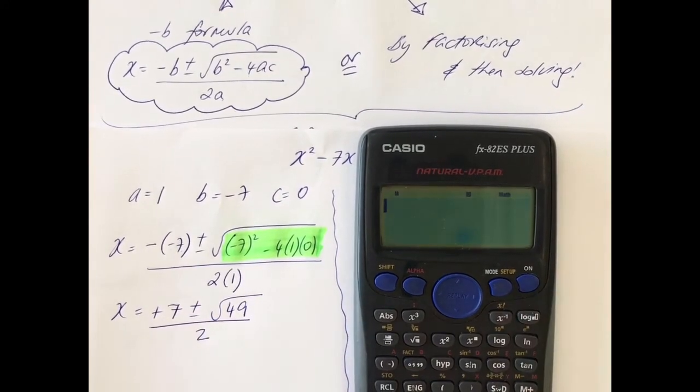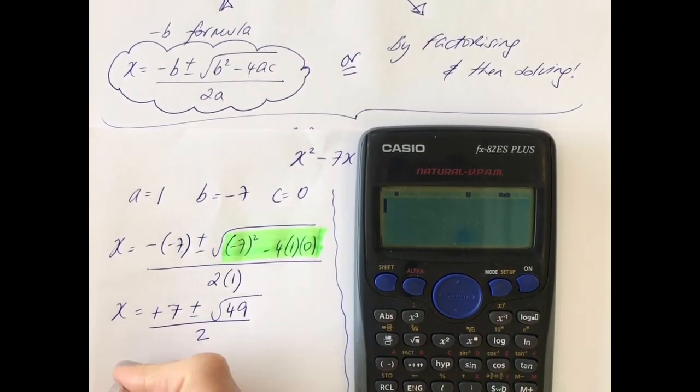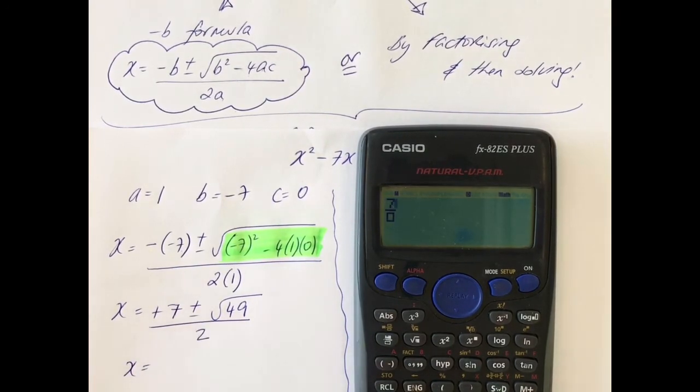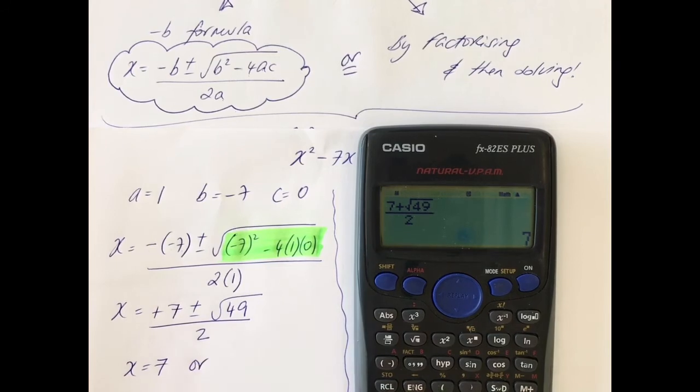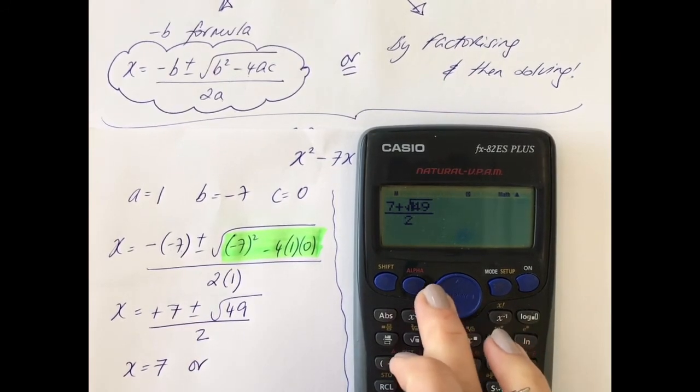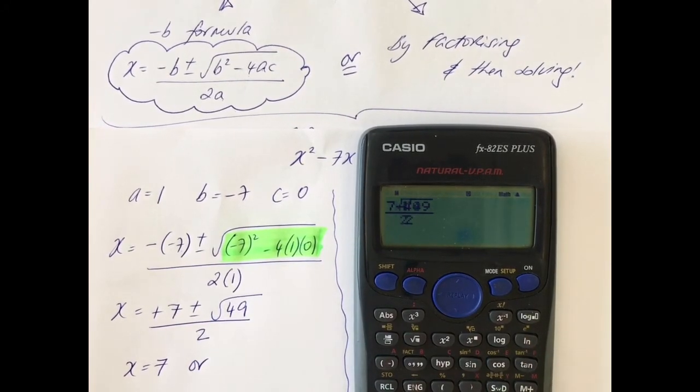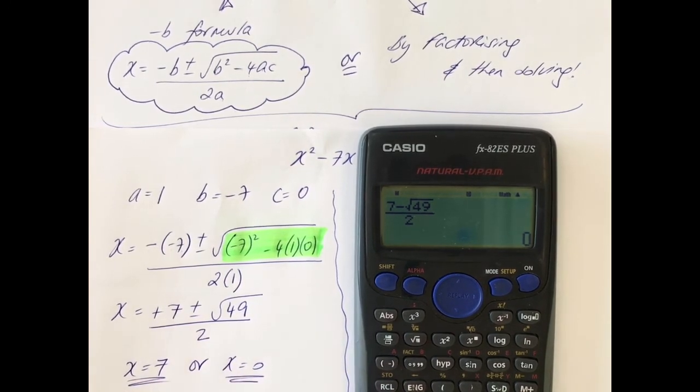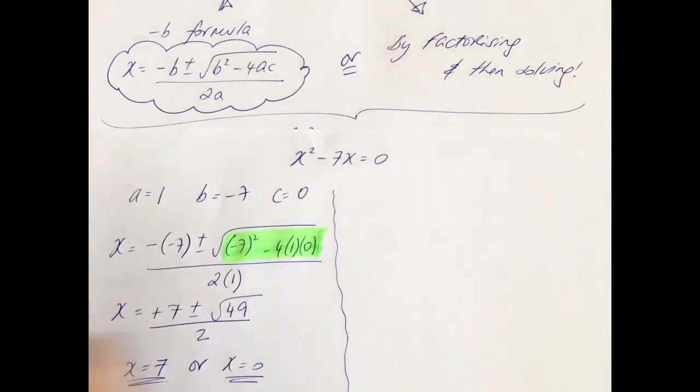So now what I'm going to do on the calculator is open up my fraction, put in seven, we'll do the plus first, plus square root 49 over two, and the answer is seven. Come back up here now and put in the minus, zero. So x equals seven or x equals zero.